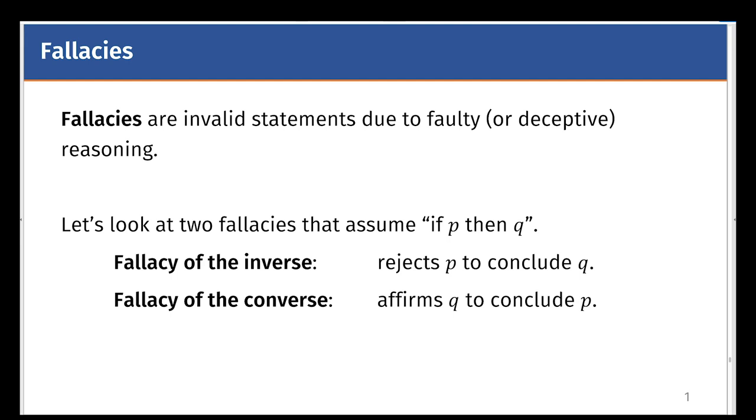It works by rejecting the if part in order to conclude the then part. Normally, you would have a valid argument by affirming P in order to affirm Q. But in the fallacy of the converse, you do it the other way around. It is illegal to affirm Q to conclude P.